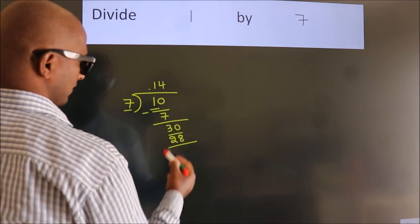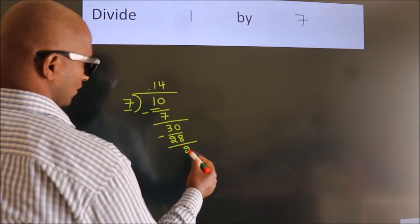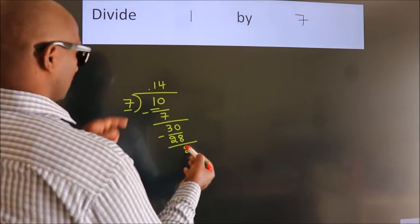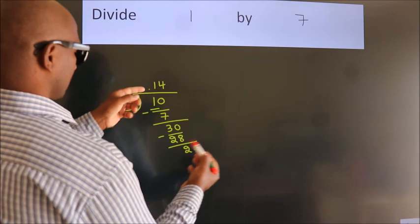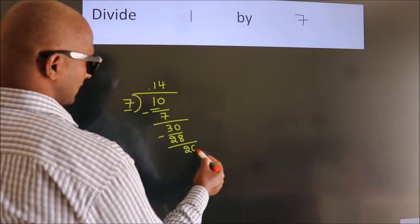Now, we subtract. We get 2. After this, we already have the decimal. So, we directly take 0.